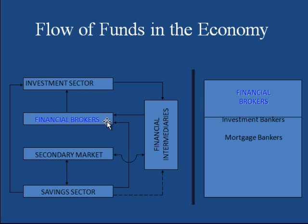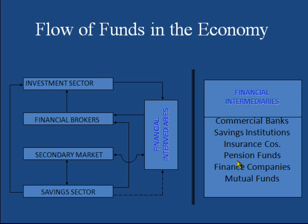These shares are also bought from financial brokers by financial intermediaries. Financial intermediaries include commercial banks, savings institutions, insurance companies, pension funds, financial companies, and mutual funds. These financial intermediaries buy shares from financial brokers, so there is a flow of funds from financial intermediaries to financial brokers. Financial brokers also receive funds from financial intermediaries because financial intermediaries invest in or buy securities from financial brokers.